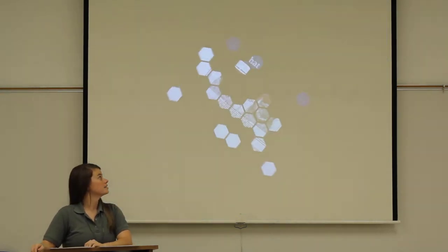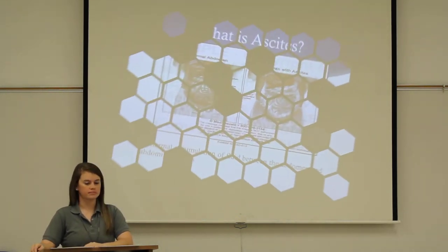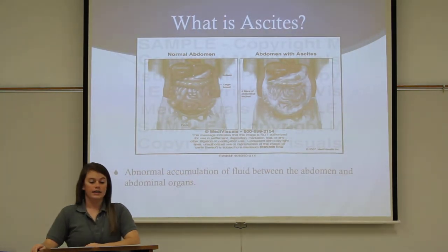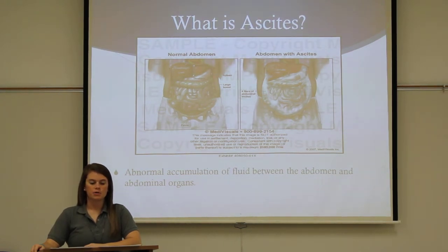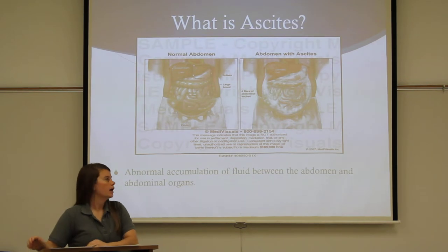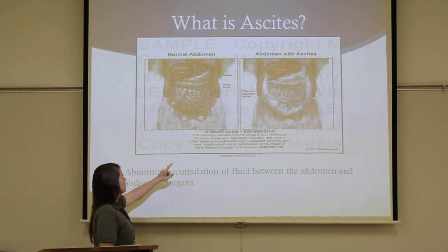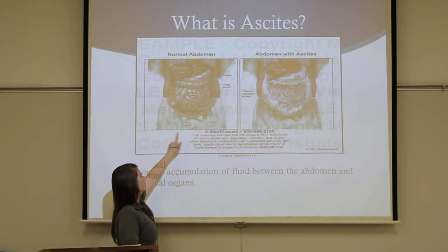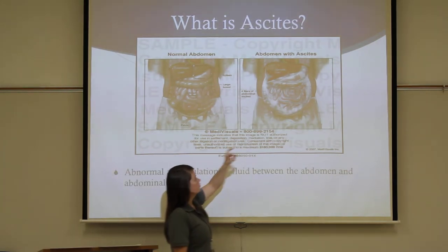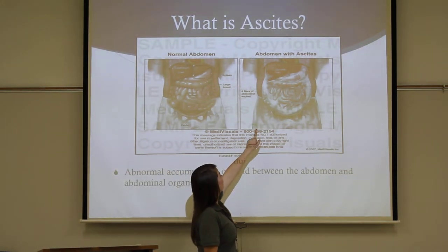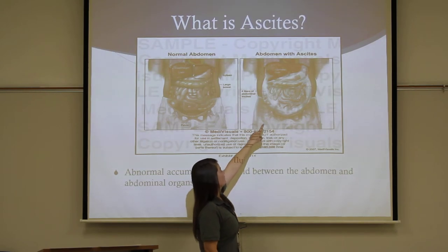So what is ascites? It is the abnormal accumulation of fluid between the abdomen and the abdominal organs, more specifically the peritoneal cavity. As you can see from this picture, this is a normal abdomen with no fluid buildup between the organs, and this is a picture of the abdomen with fluid buildup of approximately 4 liters.